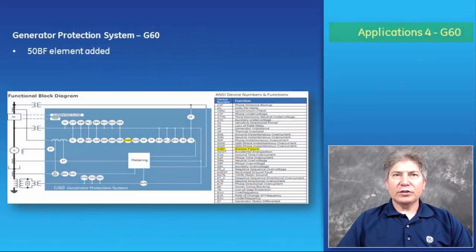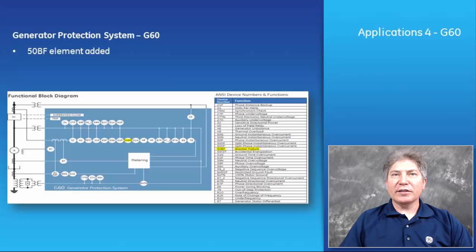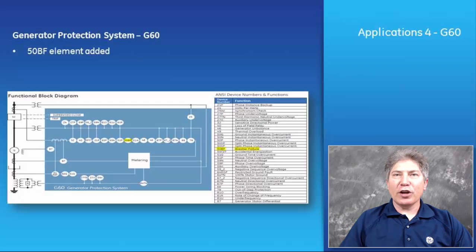Application 4: UR G60. UR firmware version 7 provides the G60 generator protection system a dedicated protection element for breaker failure. Previously, implementing breaker failure functionality required manual FlexLogic configuration. Supporting a dedicated breaker failure element simplifies and standardizes settings, and the element shares the standard logic scheme applied to breaker failure elements across the UR family.